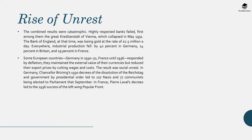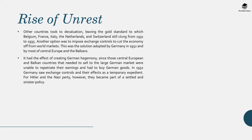Some European countries — Germany in 1930–32 and France until 1936 — responded by deflation, maintaining the external value of the currency but reducing export prices by cutting wages and costs. The result was social unrest. In Germany, Chancellor Brüning's 1930 decrees led to the dissolution of the Reichstag and government by presidential order, which led to 107 Nazis and 77 communists being elected to parliament that September. Always remember: in times of crisis, extremist parties always win out. In France, Pierre Laval's decrees led to the 1936 success of the left-wing Popular Front. Other countries took to devaluation, leaving the gold standard, to which Belgium, France, Italy, the Netherlands and Switzerland clung from 1931 to 1935. Another option was to impose exchange controls to cut the economy off from world markets — this was the solution adopted by Germany in 1932 and by most of Central Europe and the Balkans.